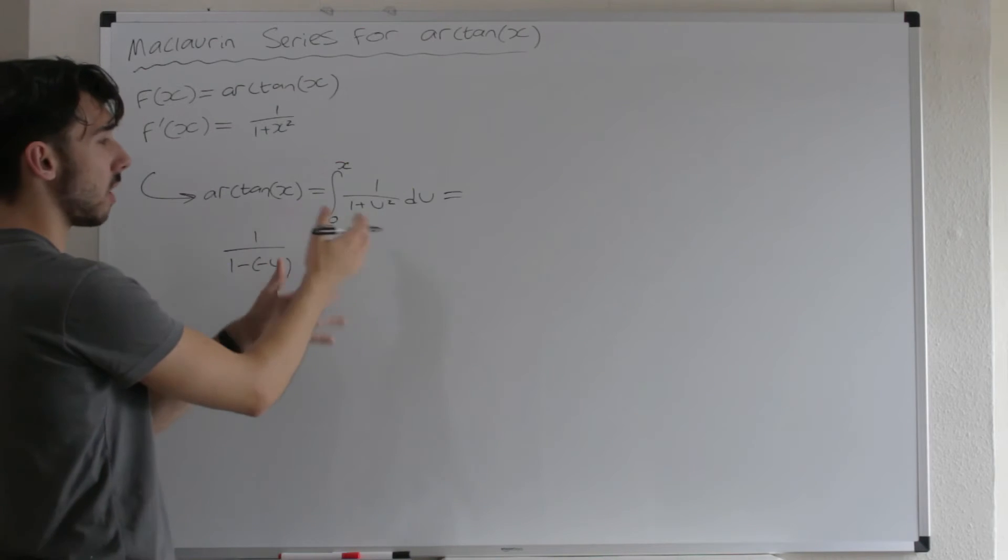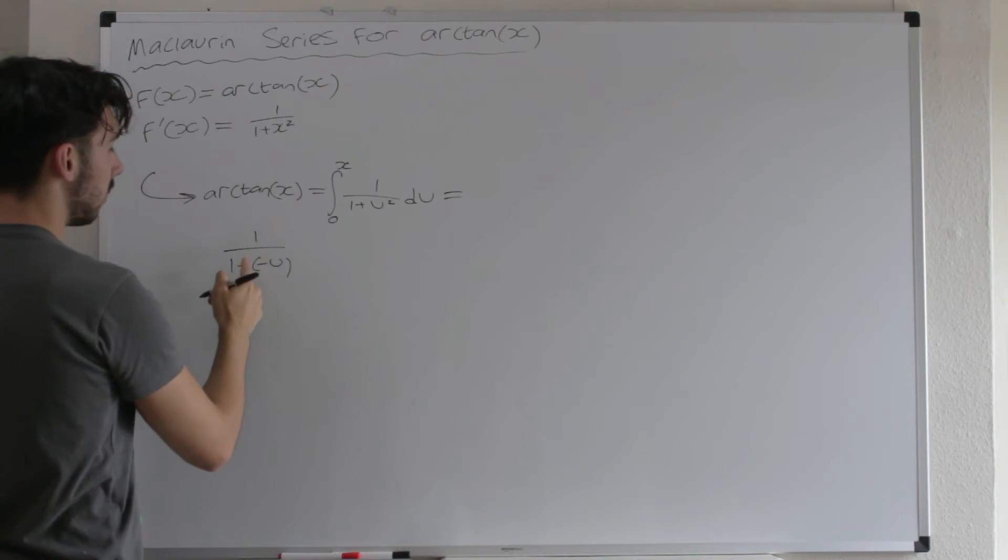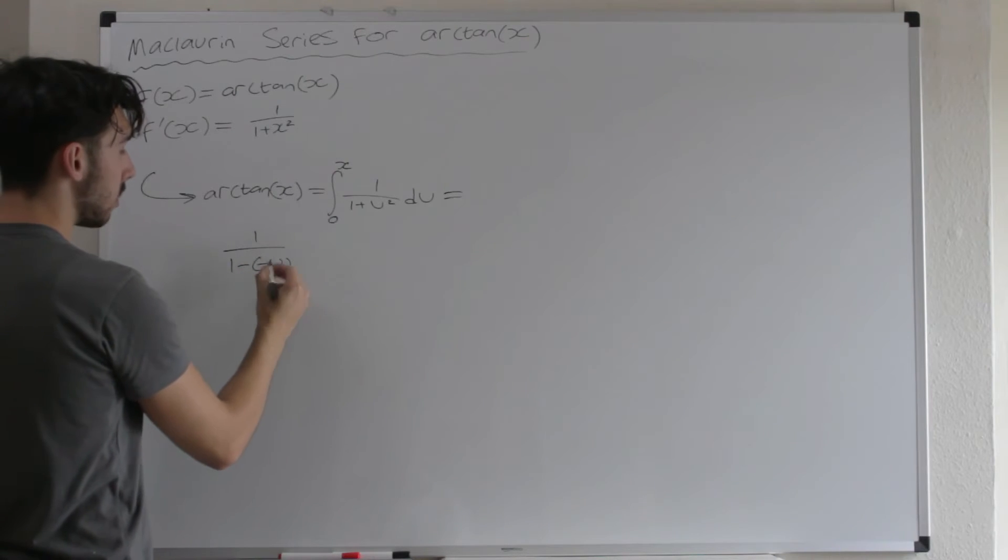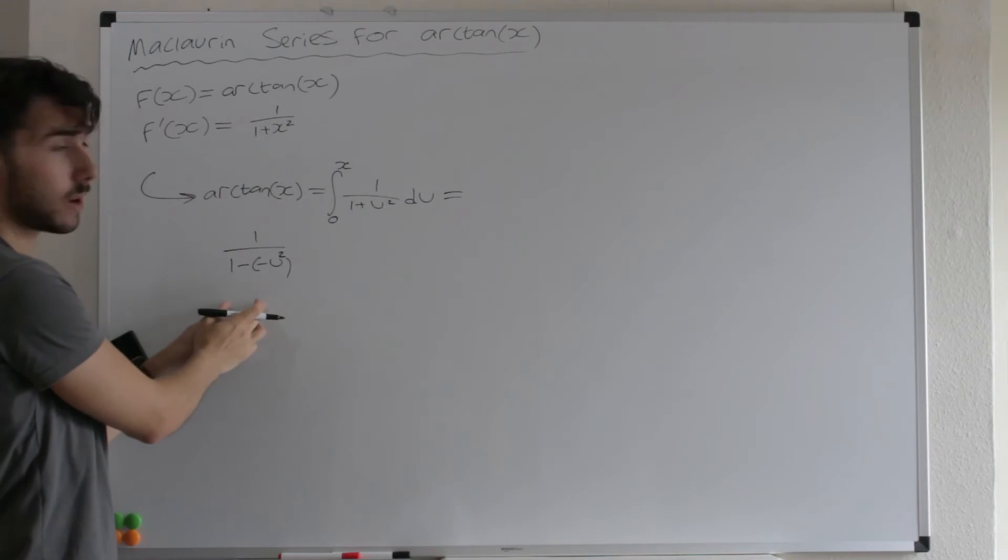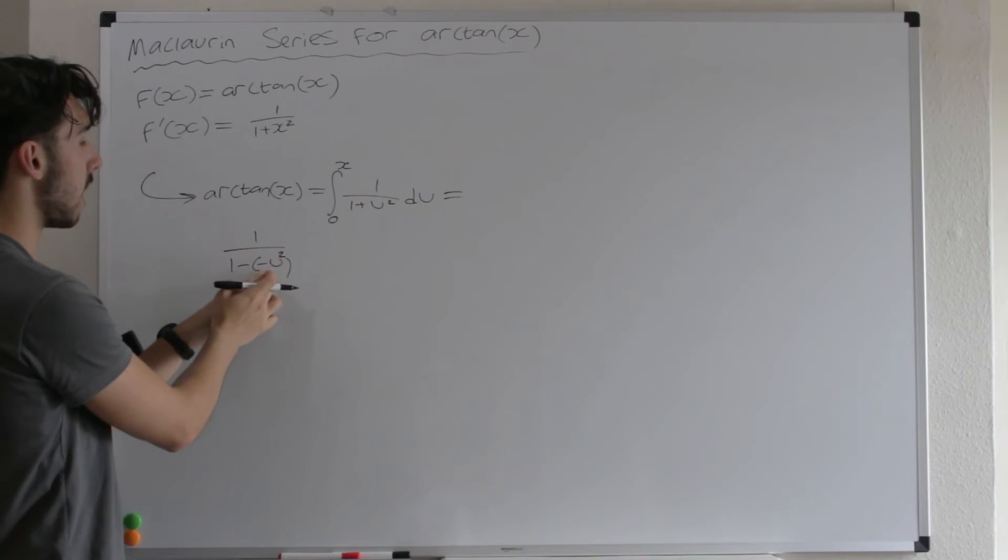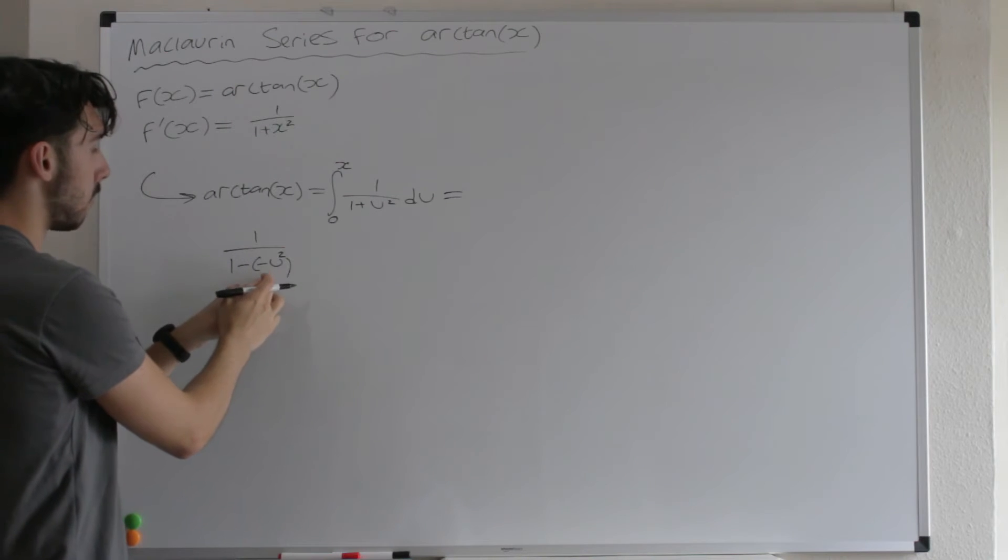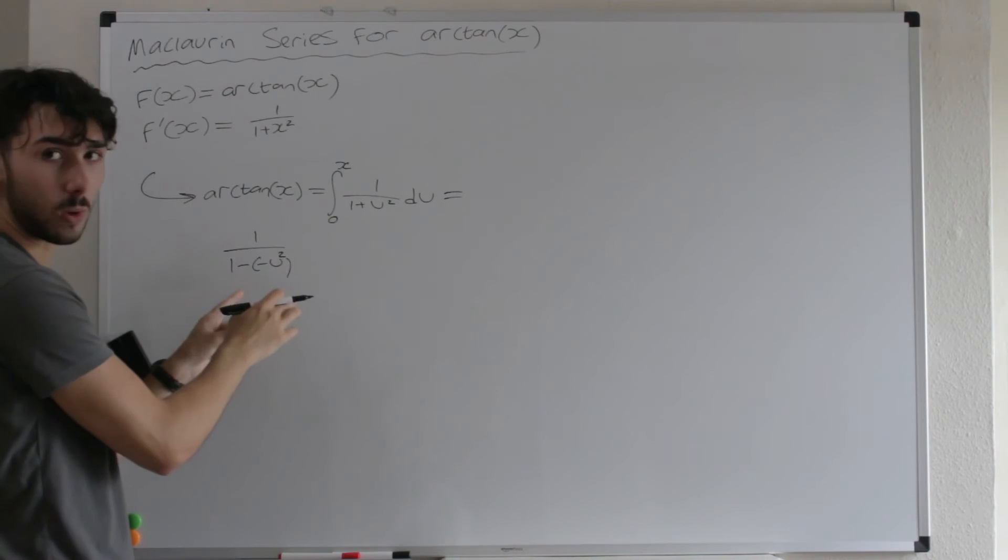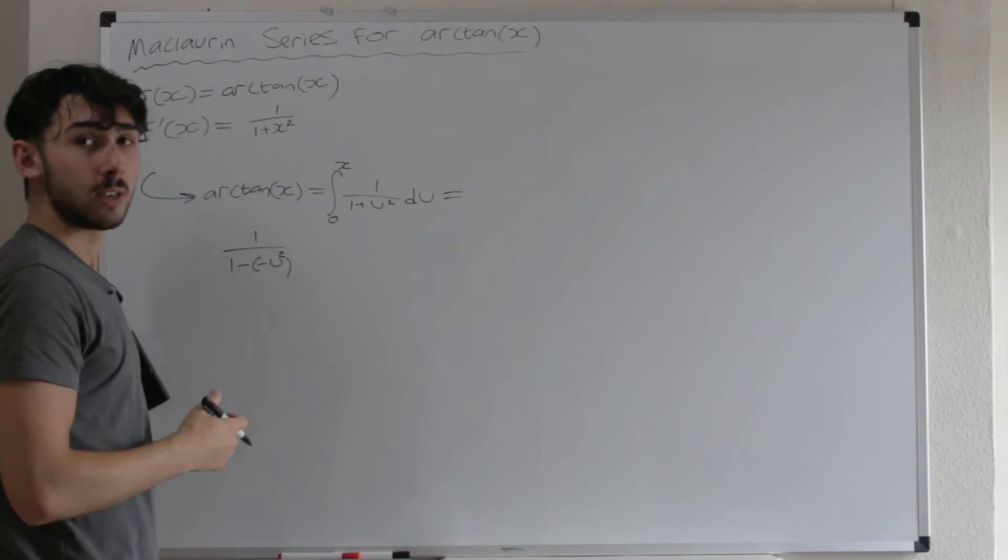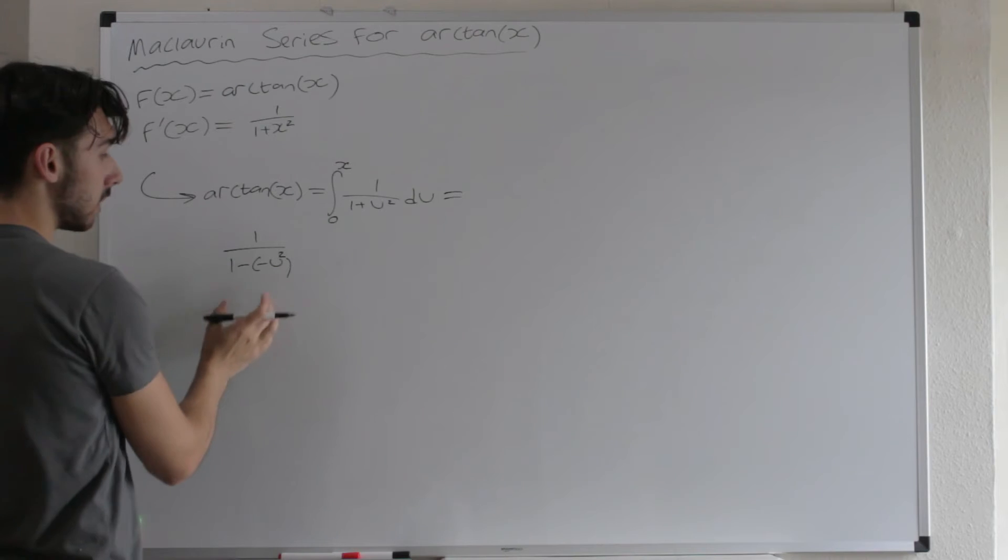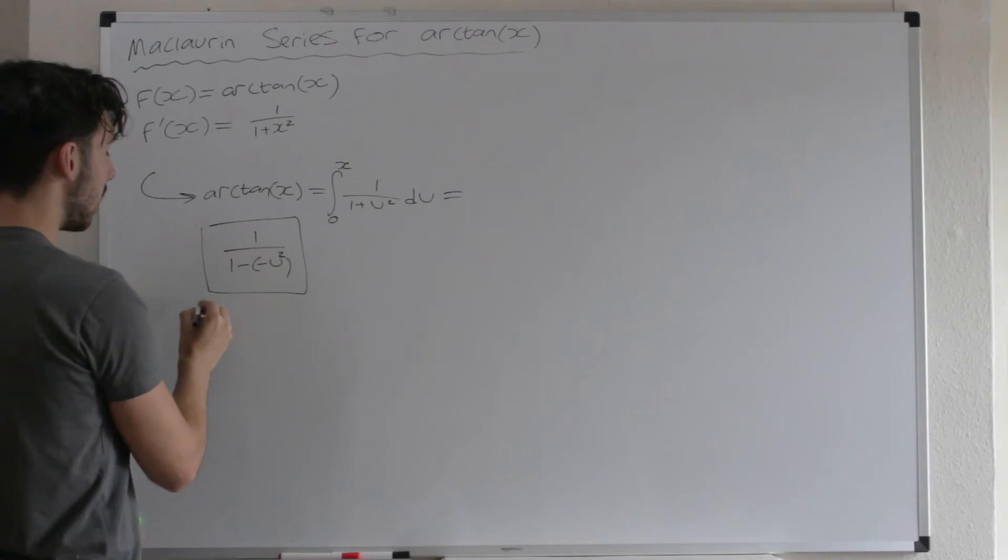1 over 1 plus U squared is just 1 over 1 minus minus U squared, isn't it? This is just 1 over 1 plus U. I hope that we agree because you're squaring the U first and then it's minus. So this really is 1 over 1 minus minus U squared, 1 over 1 plus U squared. The reason we've done this is because now we can write out the geometric series for this because this is the formula for a geometric series.